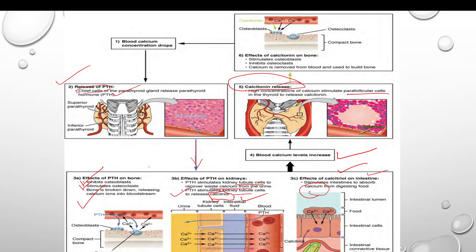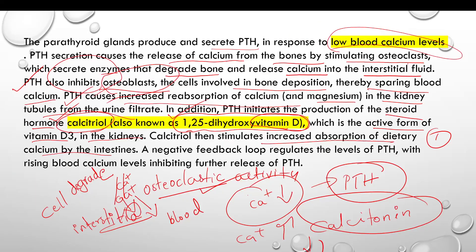When calcium is released from bone and absorbed into the blood, we try to maintain the calcium level in the blood. The increase in calcium raises the overall amount of calcium in the blood. That is how the parathyroid gland maintains calcium balance.